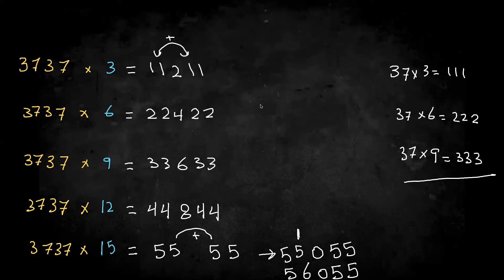And now it's your turn. Why don't you try 3737 times 18. You're going to follow the same thing that we did with the last question.